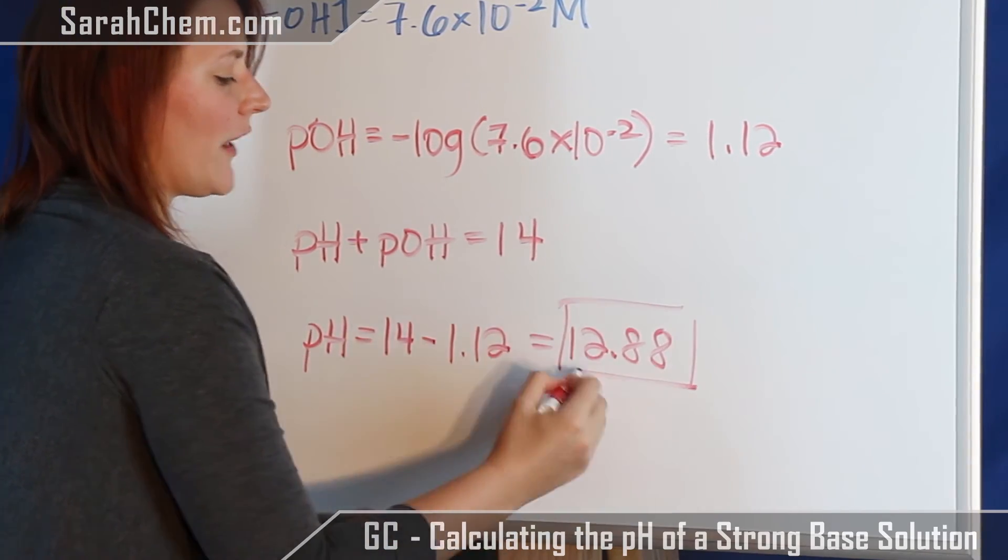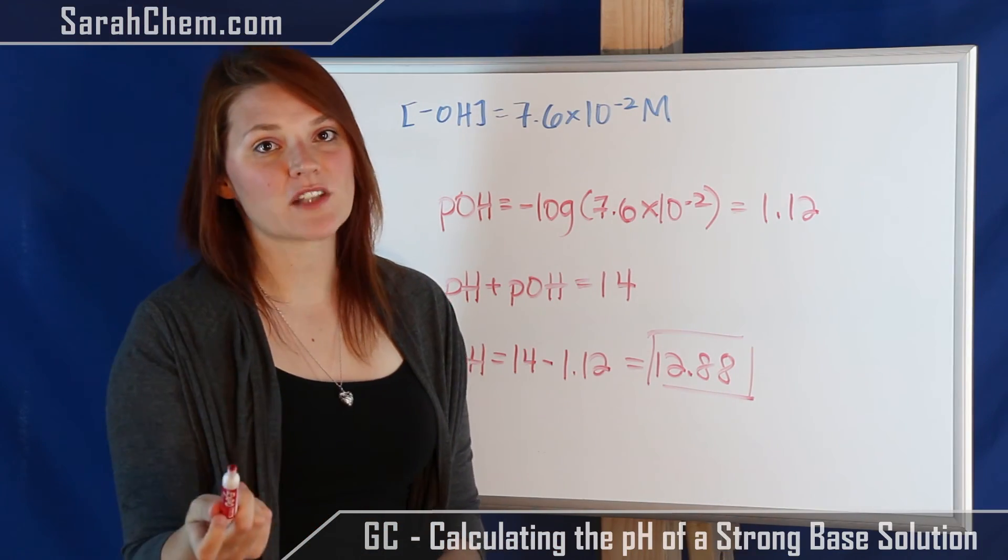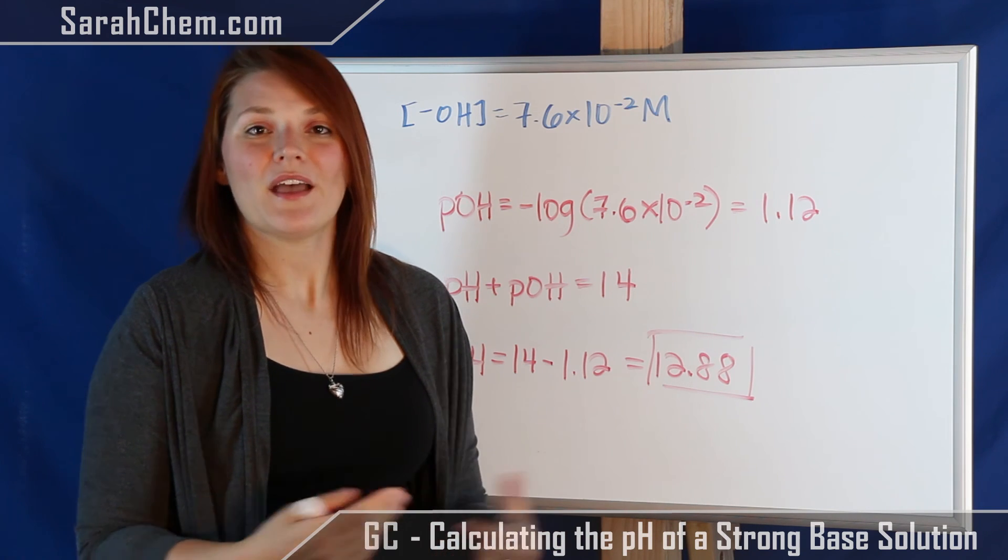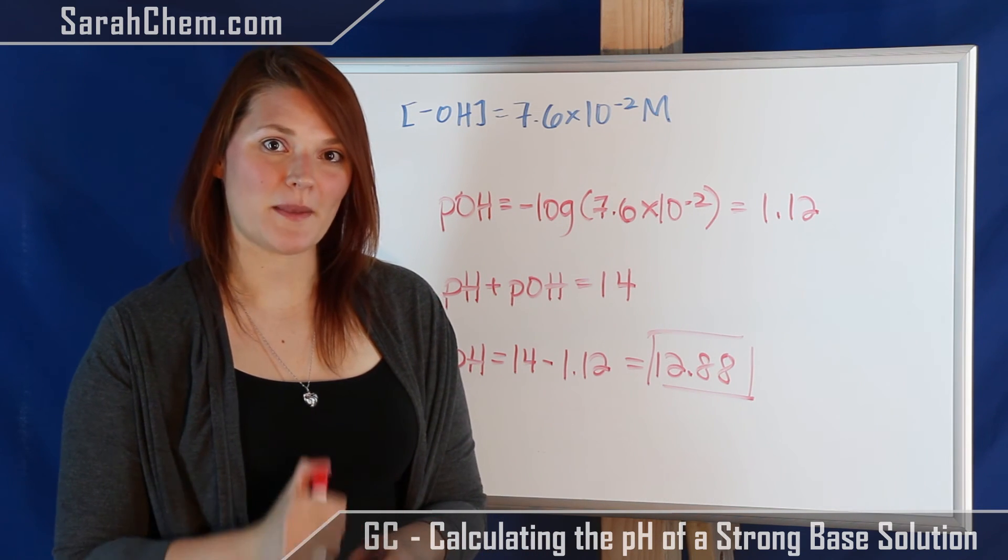So this is the value of my pH. And that makes sense on the pH scale because a pH greater than 7 means a basic solution. And that's how you'd solve for the pH of a strong basic solution.